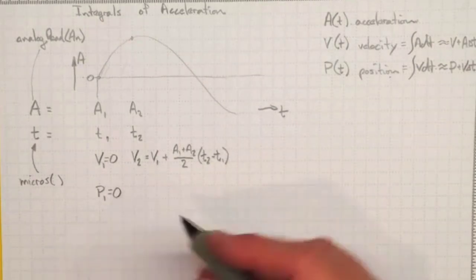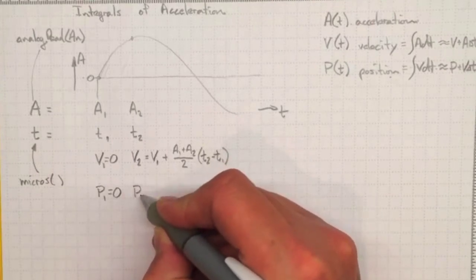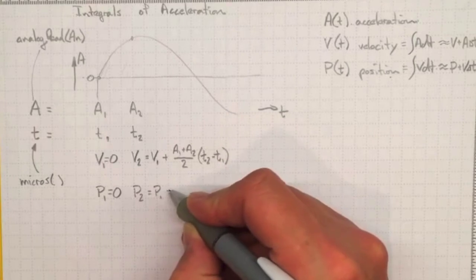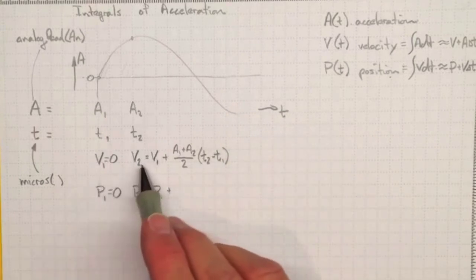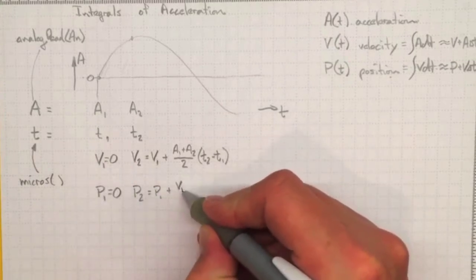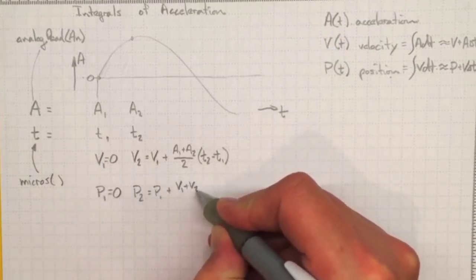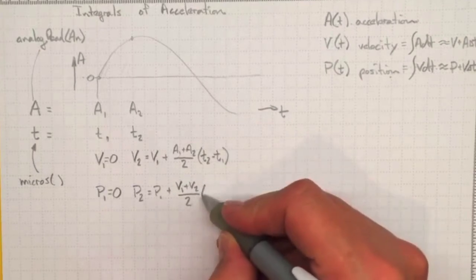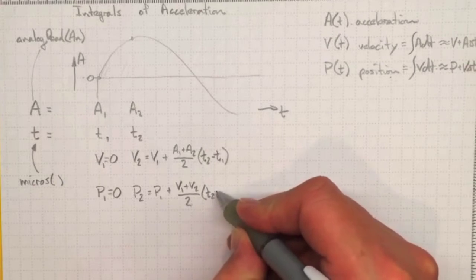And we can get an estimate of the position at 2 as just the position at 1 plus, well, the average would be the best bet of the velocity. So v1 plus v2 over 2 gives us an average of the velocity times t2 minus t1.